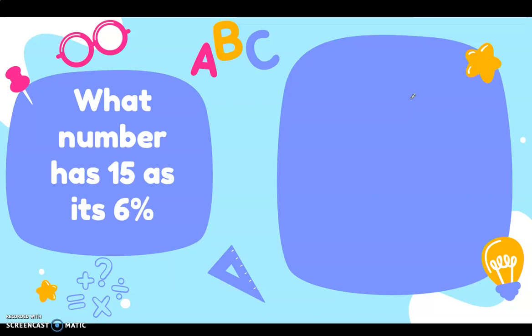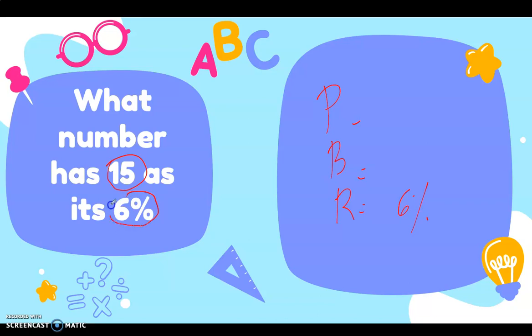Next: what number has 15 as its 6 percent? We have the rate, which is 6 percent. Now there is no word 'of' and no word 'is' here, so let's analyze: what number has 15 as its 6 percent? That means 15 is the 6 percent of that number. Therefore the percentage is 15 and the missing is the base — we don't know the whole.